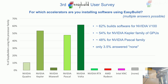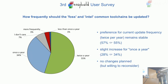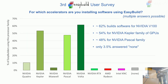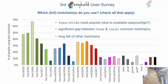For accelerators, NVIDIA rules — no surprise. The most expensive Volta GPUs seem quite popular. What surprised me is that only 3.5% answered that they don't build software for accelerators. HPC Ghent was quite late with buying a GPU cluster — we only got our first one in September — so maybe we were just late to the party. But it surprised me that this number was so low.